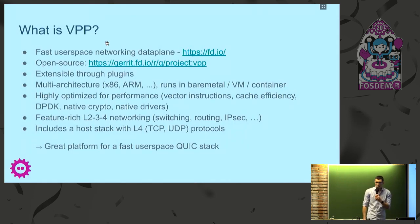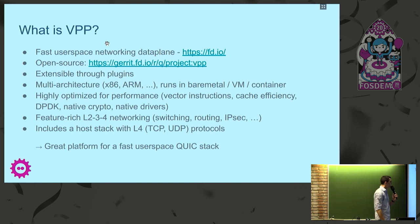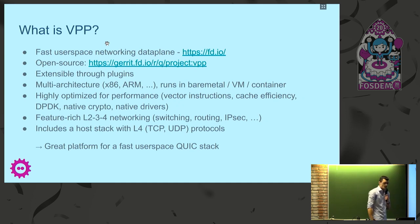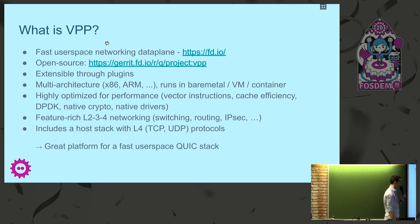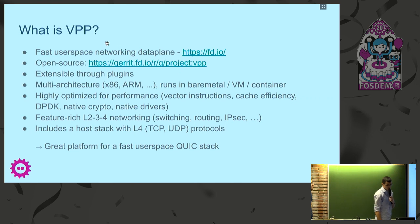Not all of you may know what VPP is, so very quickly: it's an open source, fast user-space networking data plane, very much focused on performance. It uses vector instructions and is very careful about cache efficiency. It is extensible — you can relatively simply write plugins for VPP. It comes with all you would expect from a software data plane: layer 2, layer 3, tunneling protocols, et cetera. And more importantly for today, what we call the host stack, which is a layer for protocol implementation — this is going to be our platform for the QUIC stack.